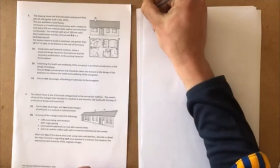Part B of that question. Part A was quite short so part B is going to be a lot longer. Survey the cottage reveals the following: softwood sliding sash windows with single glazing, uninsulated traditional cut roof with natural slates, external random rubble walls with an internal and external lime render.